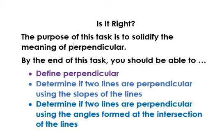In the task, the students experimented with a right triangle in the coordinate plane. The students performed a 90-degree rotation on the triangle and investigated the relationship between the line segments of the pre-image and the corresponding segments of the image. By the end of this task, you should be able to define perpendicular, determine if two lines are perpendicular using the slopes of the lines, and determine if two lines are perpendicular using the angles formed at the intersection of the lines.